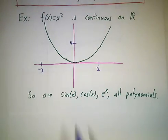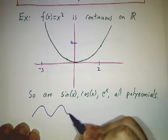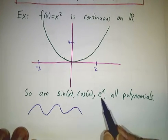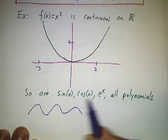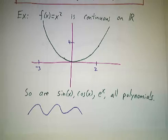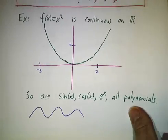Now you've also seen the graphs of sin(x). It just goes up and down and up and down. You can draw it without picking up your pencil. The graph of cos(x) looks pretty much the same. You've seen the graph of e^x. All of these are continuous. And all polynomials are continuous, and I'll explain the reason in a later video.